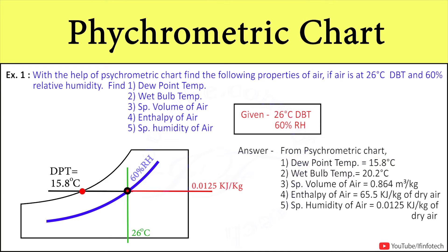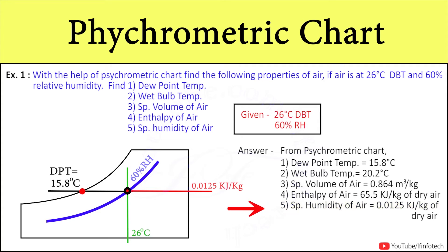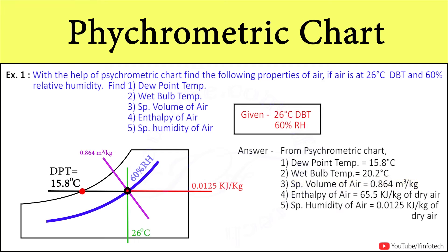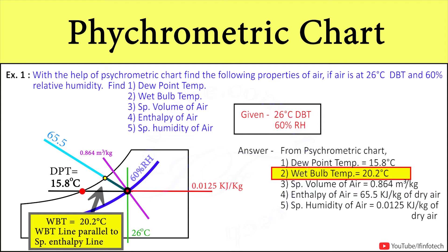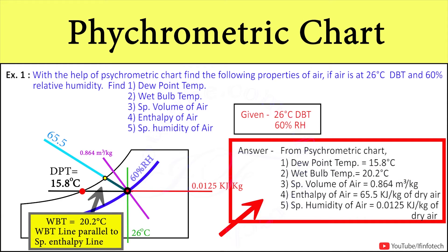Extending the line to the right side, specific humidity is obtained as 0.0125 kg per kg of dry air. From the specific volume lines, we get approximately 0.864 m³/kg specific volume, and from the inclined specific enthalpy line, enthalpy is 65.5 kJ/kg of dry air. In this way, with the help of the psychrometry chart, we can determine different properties of air at 26°C dry bulb temperature and 60% relative humidity.